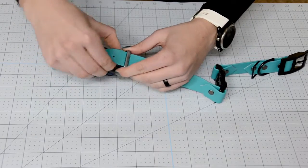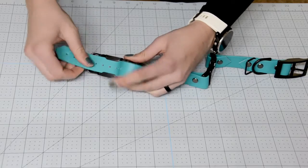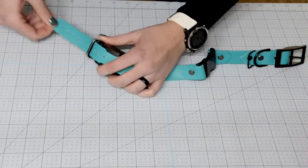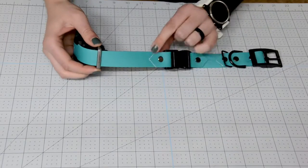Then slide it through that loop on the other side, and you typically want to get it all the way down to about this little triangle here.